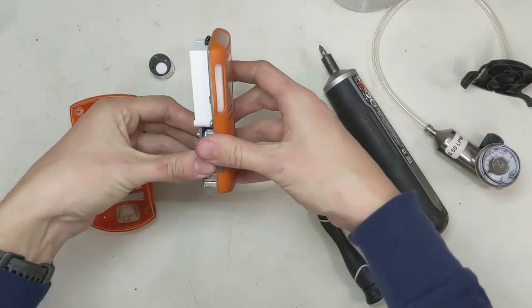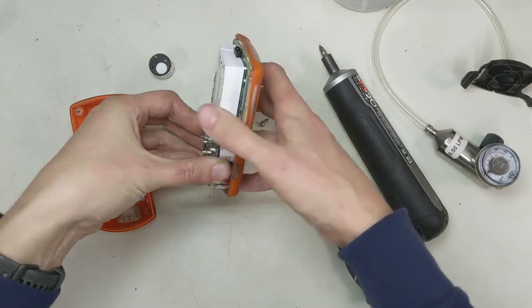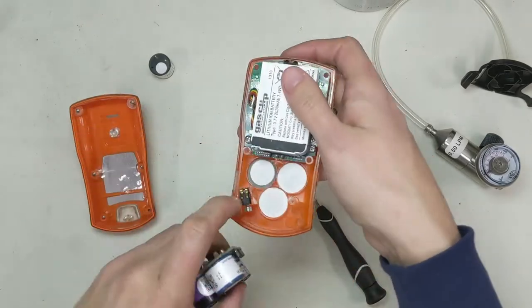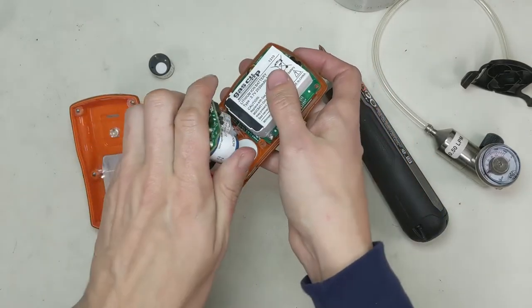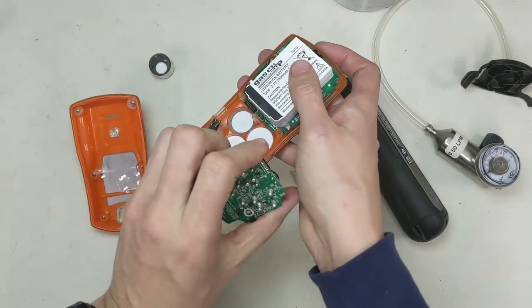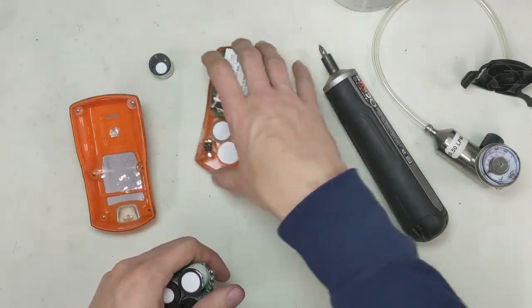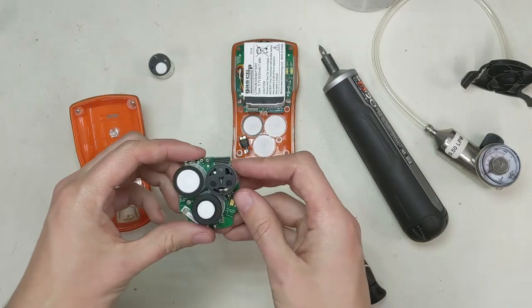Now pull this apart. Just kind of wiggle, wiggle, wiggle. Don't want to pull that battery off. You can see it's attached with these pins right here. So make sure when you're pulling, you pull straight up. Don't torque it to the side or you'll bend those pins. Put your vibrating alarm there and we'll just set that aside.